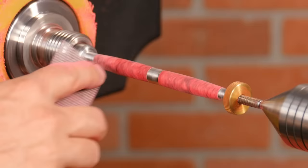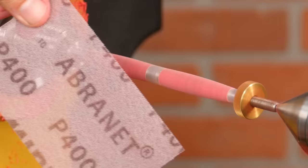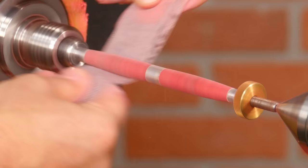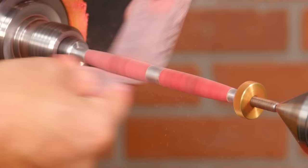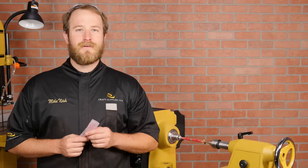Work your way through the grits, stopping the lathe and sanding laterally between each grit. This will get rid of the radial scratches that form when sanding on the lathe. I'll sand through at least 600 grit.